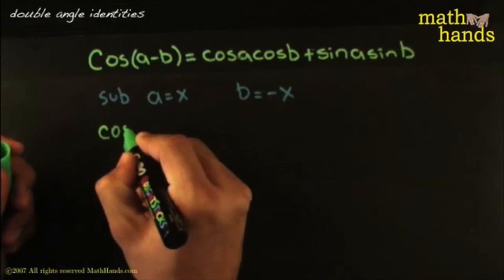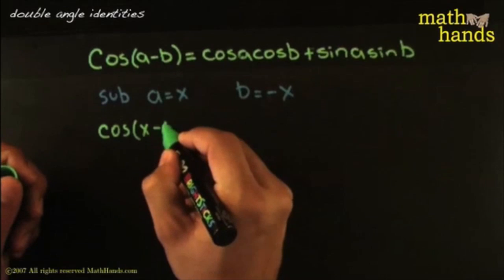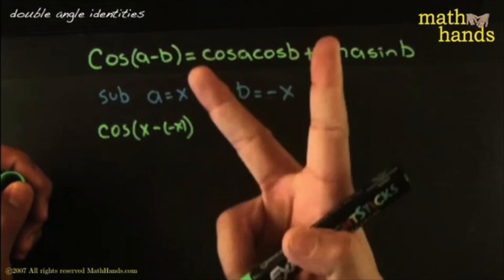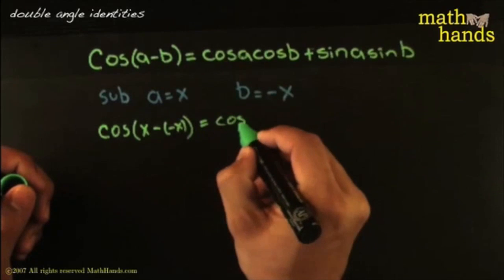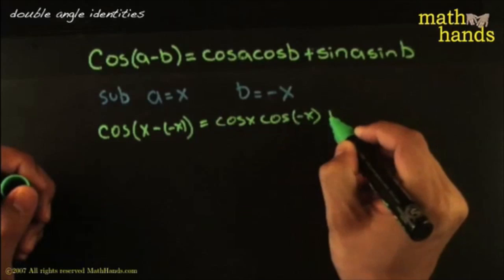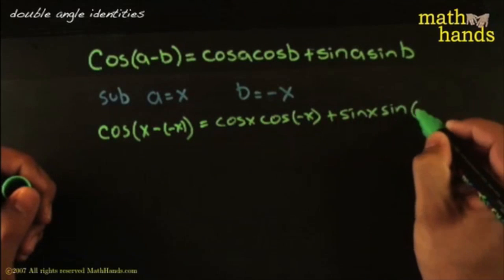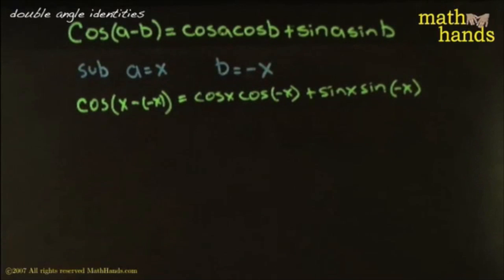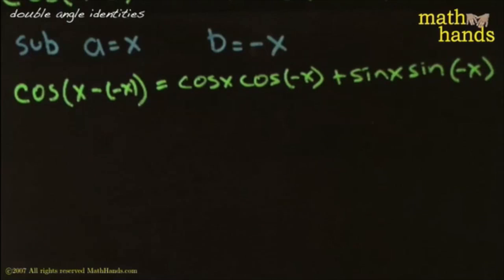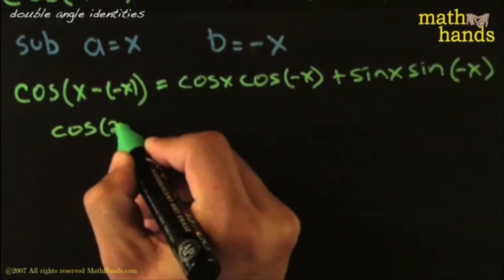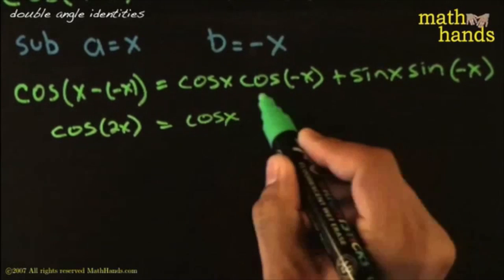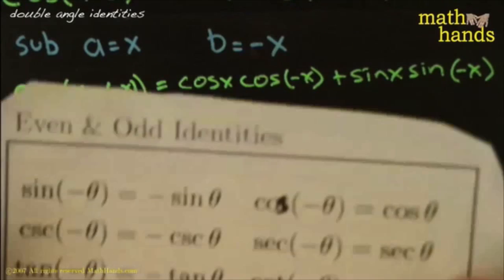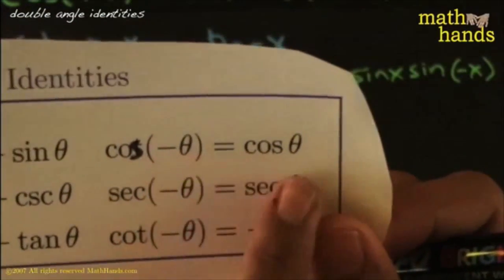If I make B equal to negative x, then I'll have negative negative x — that would make it positive. Watch this: it'll be cosine of x minus negative x. By making B be negative x, I'll make this whole thing be positive. And then I'll have x plus x, which will be twice x, and that's where I'm headed. So this would be cosine x times cosine negative x, plus sine x times sine negative x.